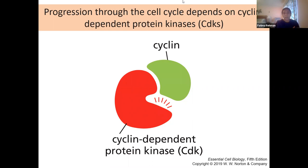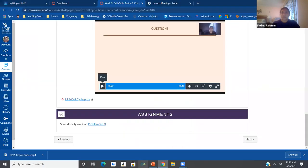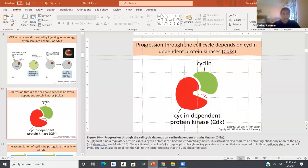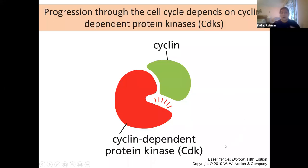The progression through cell cycle depends on cyclins that are cyclically produced and bind to their associated cyclin dependent protein kinases. Since CDKs are kinases, their downstream effect when activated by cyclin binding is phosphorylation of other proteins — either enhancing or inhibiting their activity. This gives researchers a clear idea of what to look for downstream.